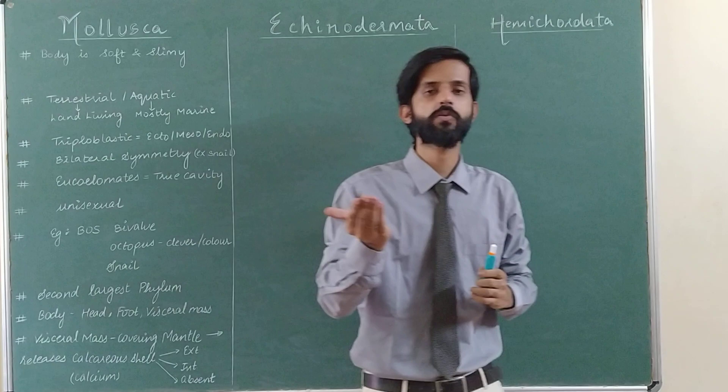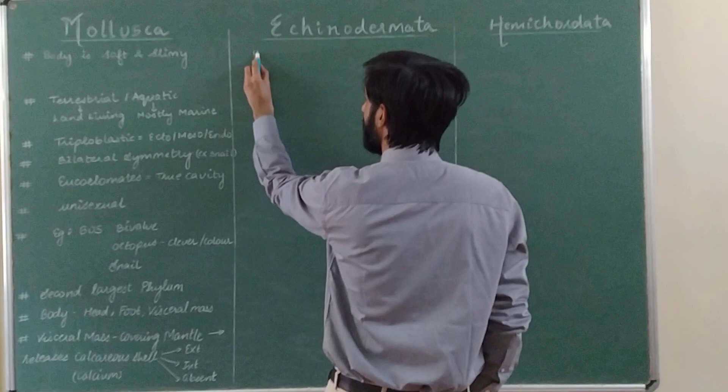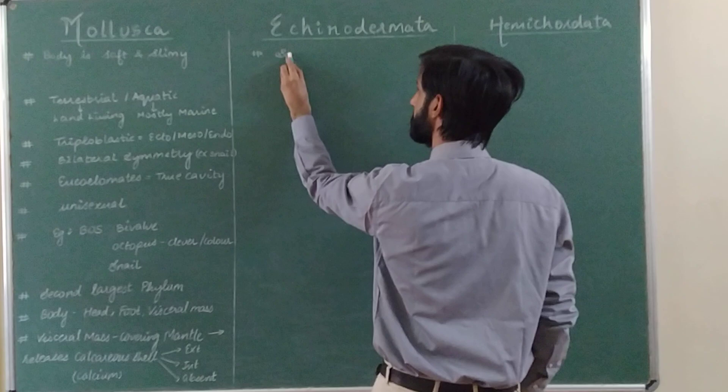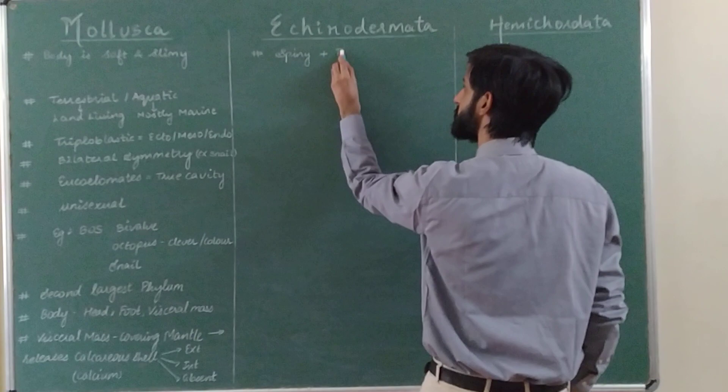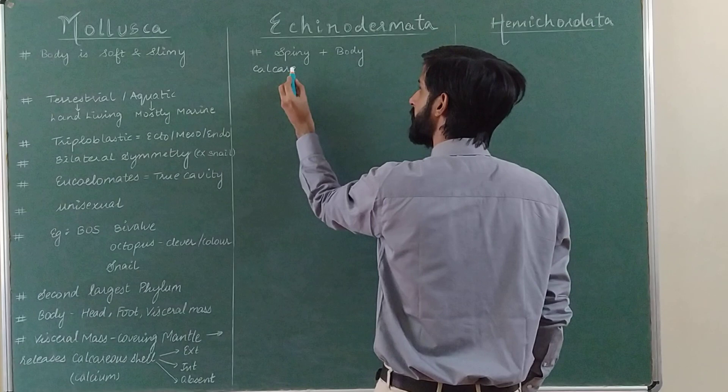This calcareous shell can be external or internal, and in some cases the shell can be absent. Moving on, the next phylum is Echinodermata. The name Echinodermata comes from 'echino' meaning spiny and 'dermata' meaning skin. So these animals have many spiny structures on their body, and these spines are calcareous.